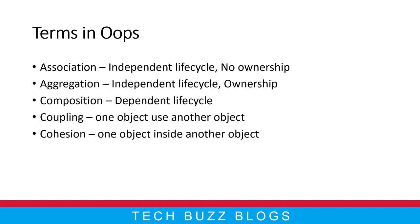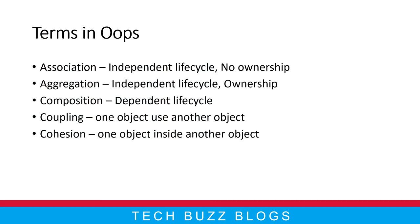Coupling is somewhat different from the above three topics. Coupling is when one object uses another object. For example, if two objects exist and one wants to use the other, that is called coupling — a coupling between one object and another. Cohesion is when one object exists inside another object. For example, an employee object — inside employee there should be an address, and address has street name, city name, pin code, and so on. So the employee object contains the address object inside it.